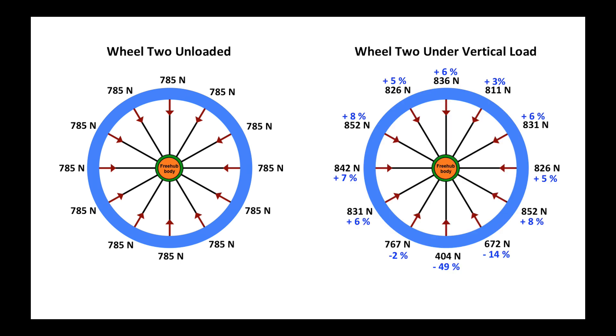When put under a load, even though we have double butted spokes, we still see a precipitous drop of tension as spokes go through the load bearing zone. Total tension for the unloaded and loaded wheels is still the same.